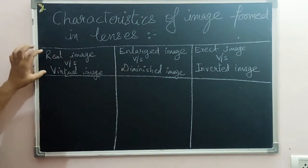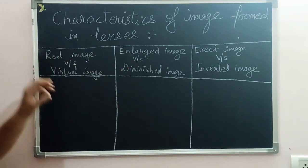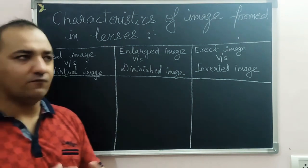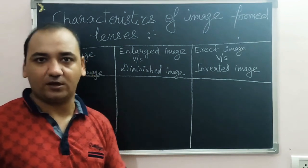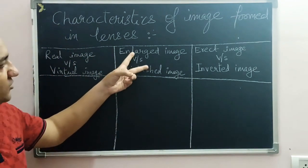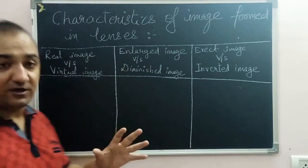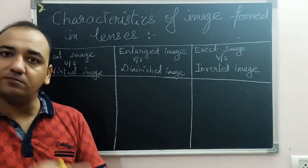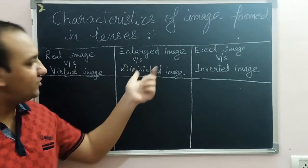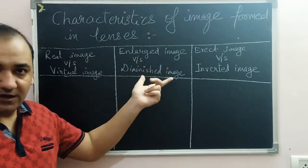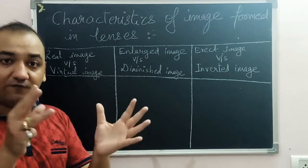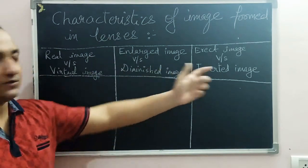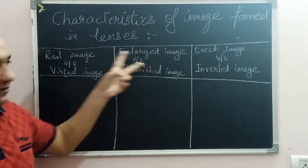The first pair is real image versus virtual image. A real image exists in the real world, while a virtual image exists only hypothetically or virtually. The second pair is enlarged image versus diminished image: enlarged means the image is bigger (magnified) compared to the object, while diminished means the image is smaller and compressed compared to the object.